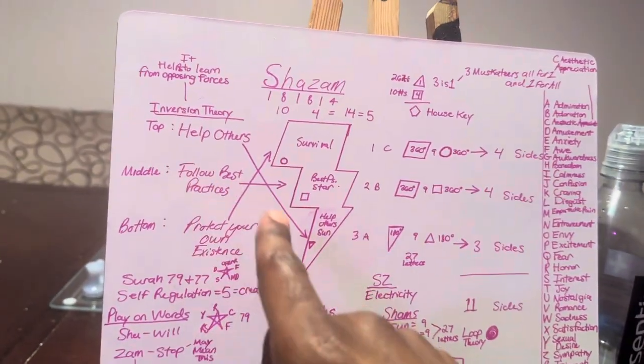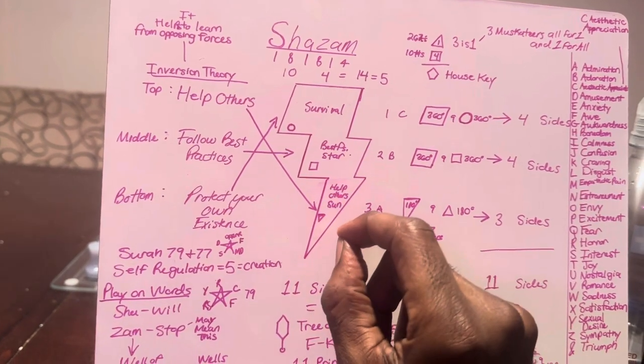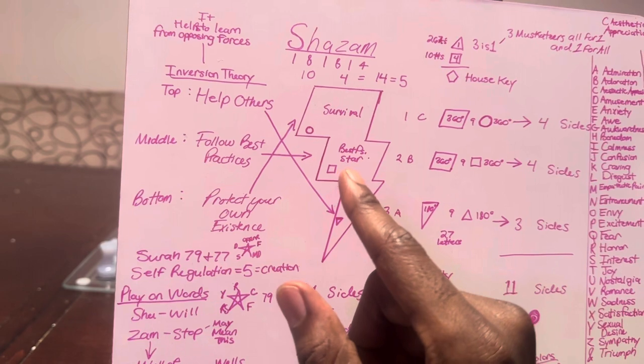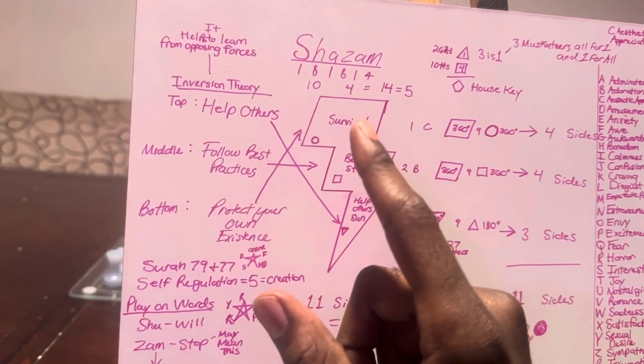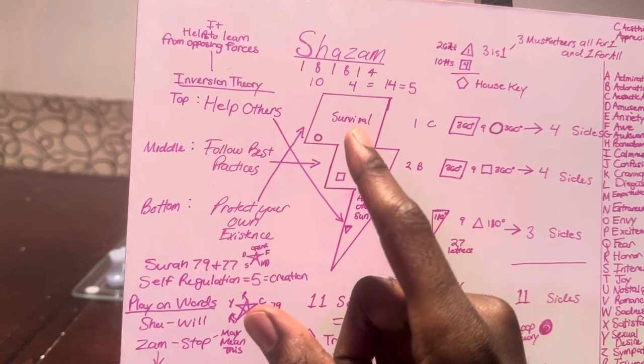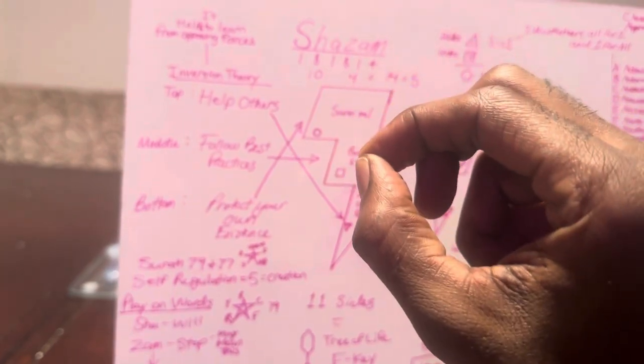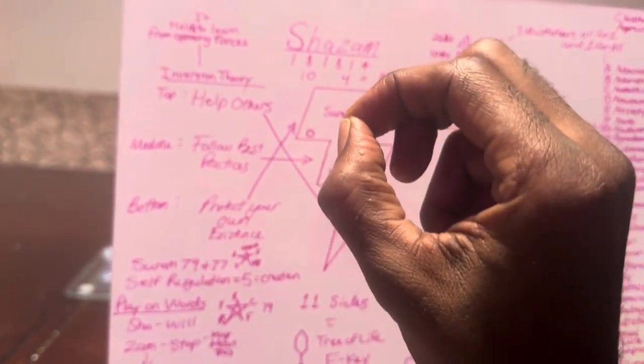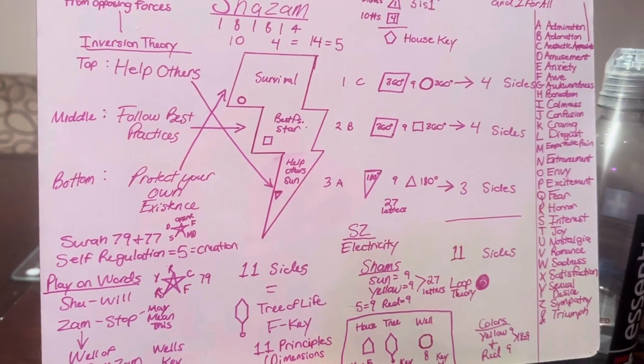Also here, we've kind of mixed it up a little bit. We have here, we know that the triangle represented help others and the symbol for that was the sun. We know that the square represented best practices and the symbol for that was the star. And we know that the circle was the symbol for survival and the circle of life. But here, because we're using a lightning symbol, a geometric shape, rather than putting a circle, notice we've just put two squares that are just connected to each other.